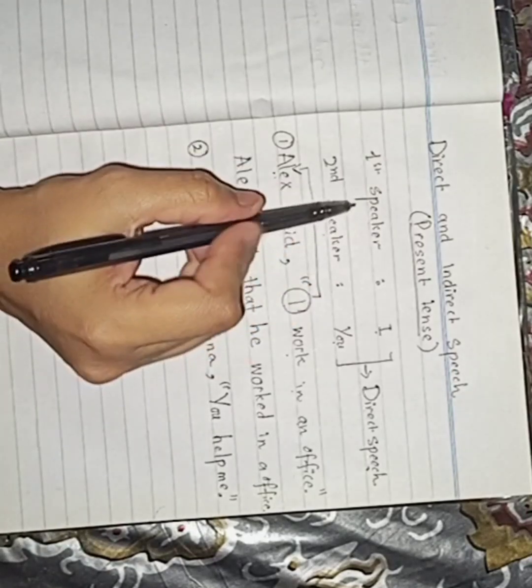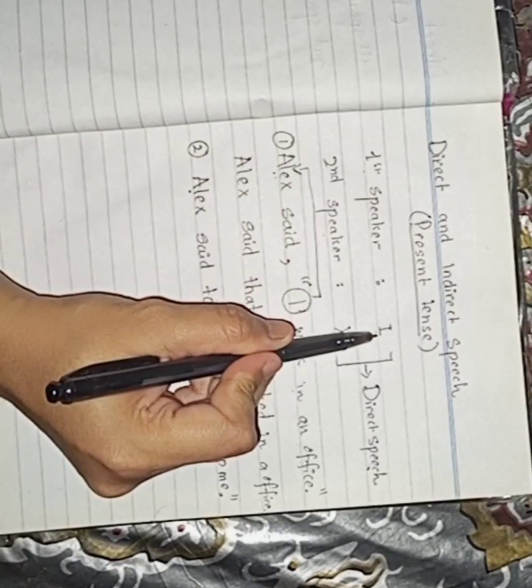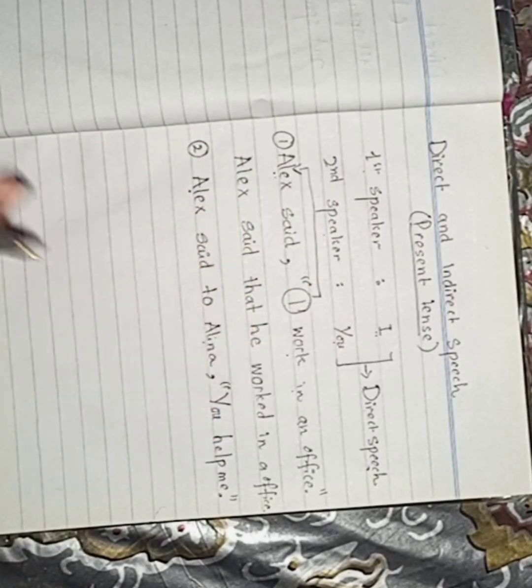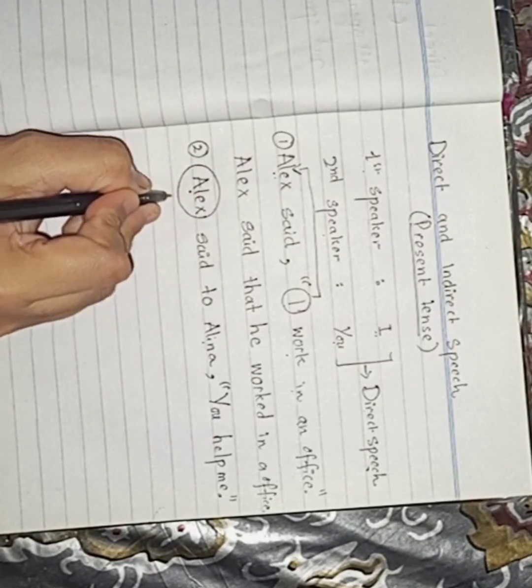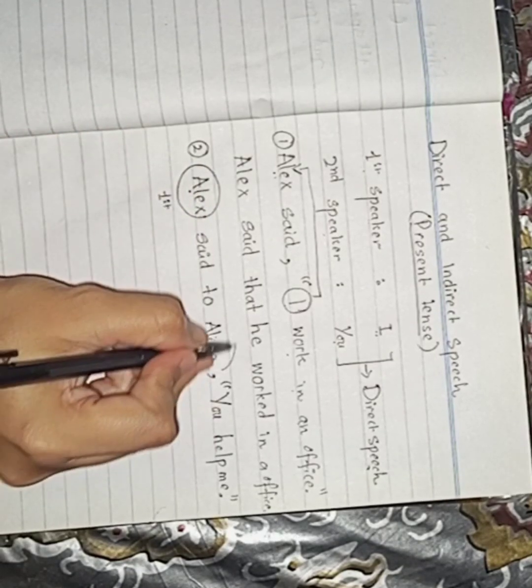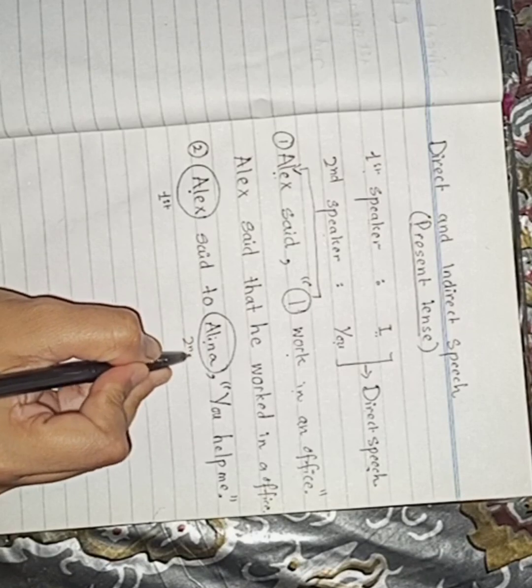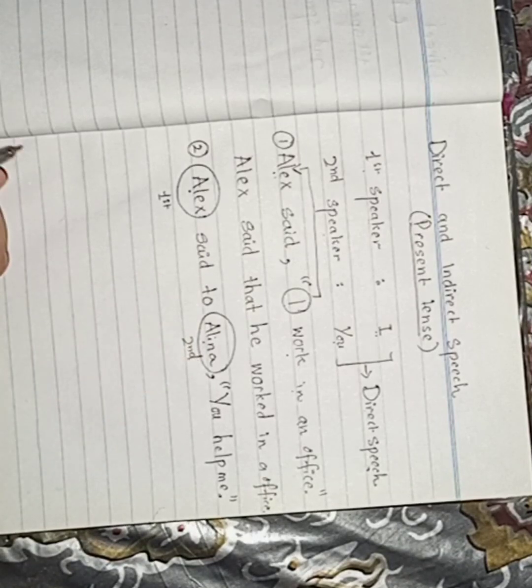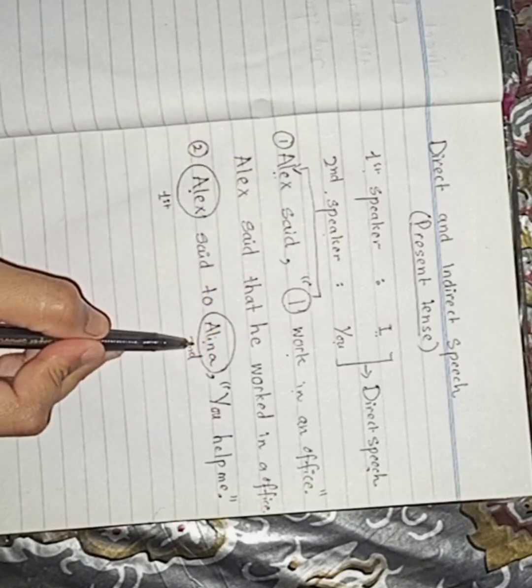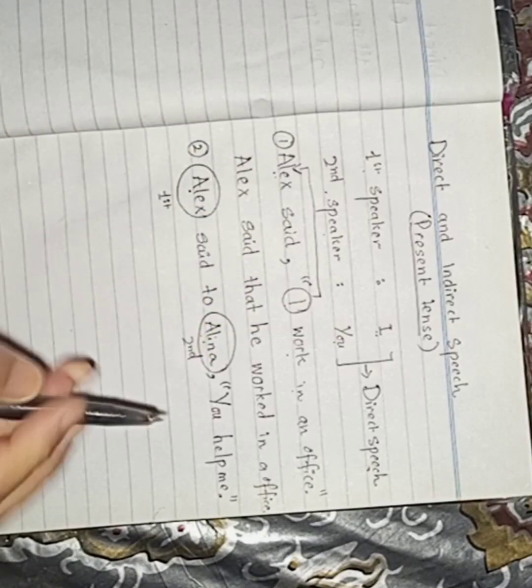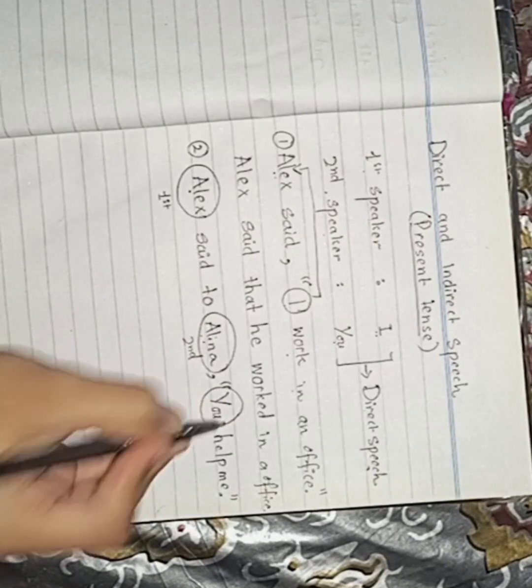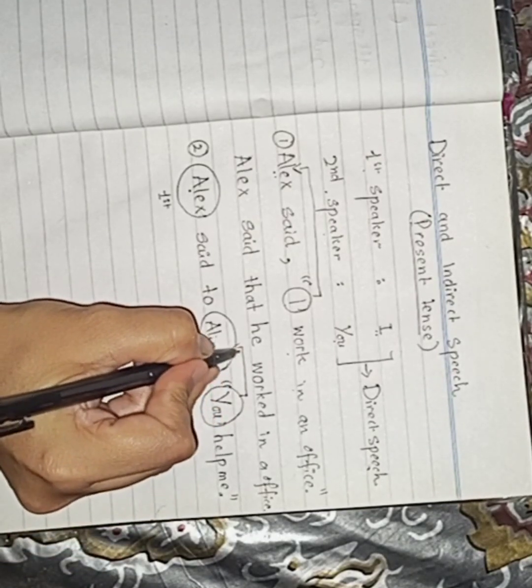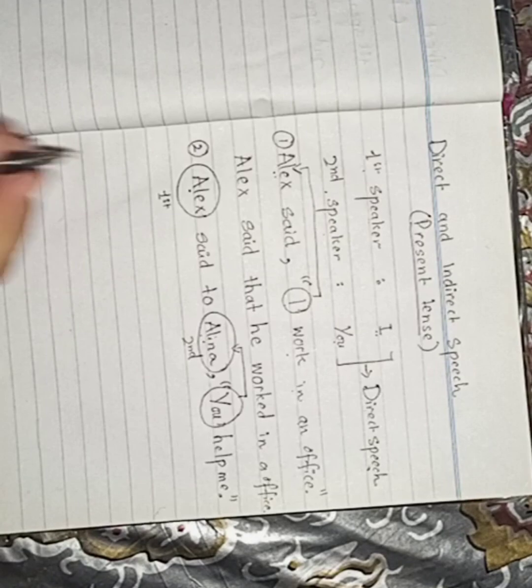Now we know this is the sentence of present tense, but according to this rule, first speaker always contains I, second speaker always contains you. Now Alex is the first speaker and Alina is a second speaker. Now you guess that second speaker is Alina and we know that you subject is always for the second speaker. Here we have the second speaker Alina. So this you is of course for Alina. Got my point.